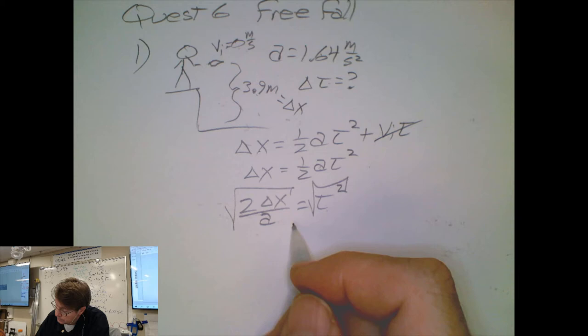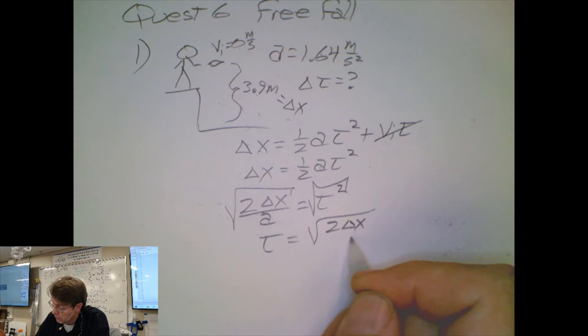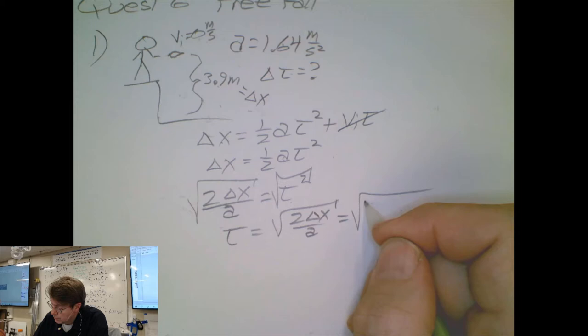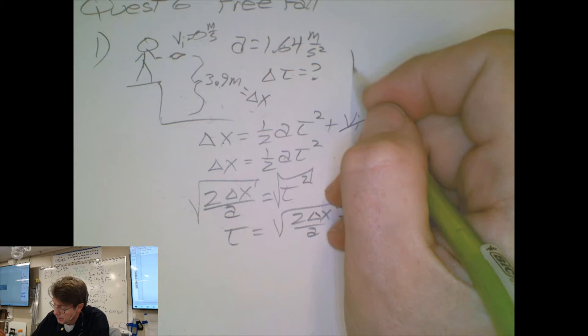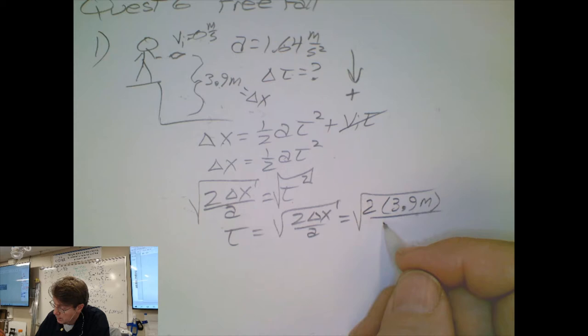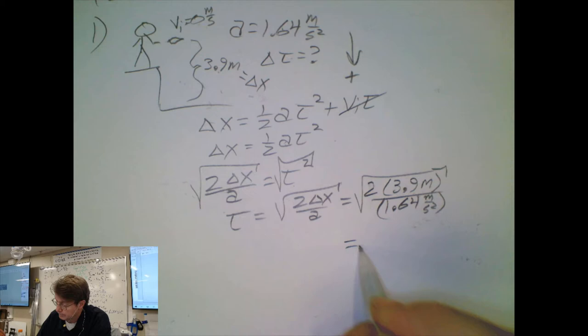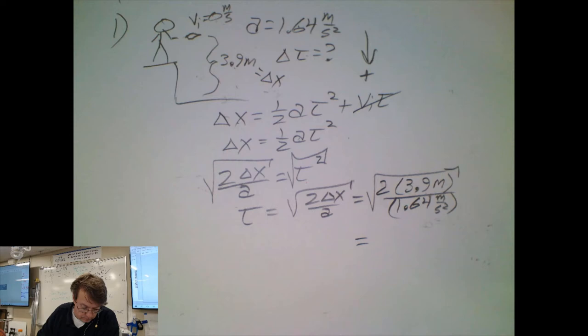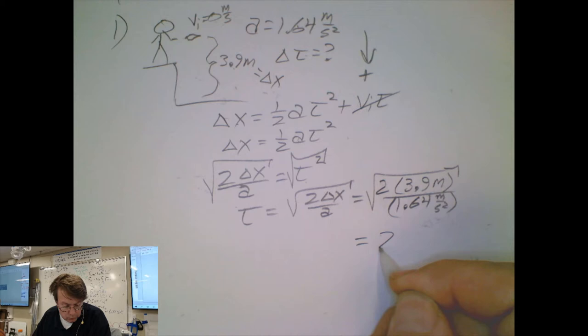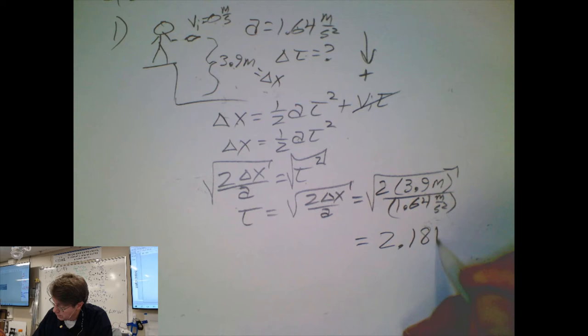Plugging in our values: two times 3.9 meters divided by 1.64 meters per second squared — we're picking down to be positive to keep signs simple. Plugging into the calculator, we get an answer of approximately 2.18 seconds.